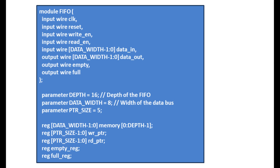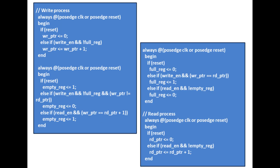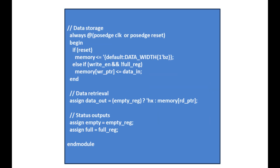In this code, first we have done the module declaration — module name FIFO — and the input/output signals, then the parameter values, and then some registers and signals. This is another part of the code where we have performed the write process and the read process. And finally, this is the last part where we have done the data storage, data retrieval, and the status output.